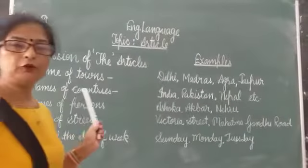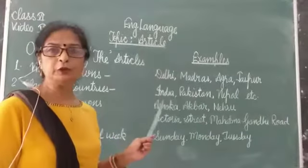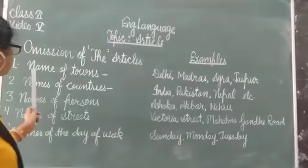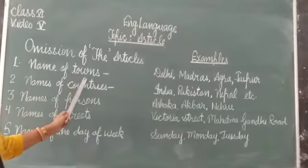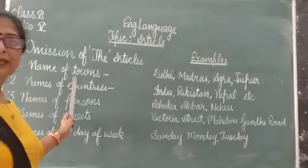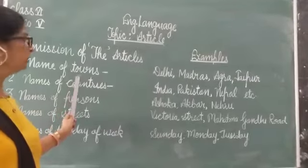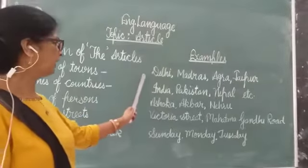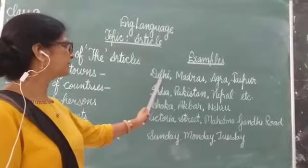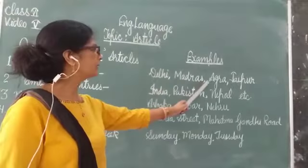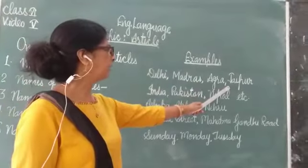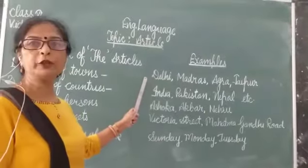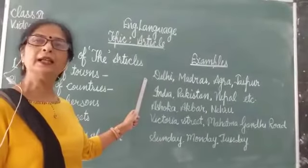With the name of a proper noun, we do not use the article 'the'. Number 1 is names of towns. If we are talking about the names of a town, there is no use of the article. For example: Delhi, Madras, Agra, and Jaipur. Before these names of towns, we will not use the article 'the'.